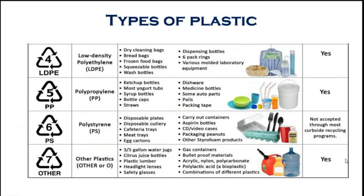LDPE is also used for dispensing bottles, six-pack rings, and various molded laboratory equipment. This is also recyclable. The fifth category is polypropylene, used for ketchup bottles, yogurt tubes, syrup bottles, bottle caps, packaging tapes, and paint tubs purchased from the market. This is also recyclable.